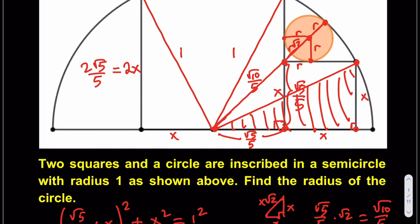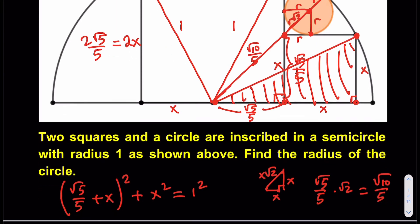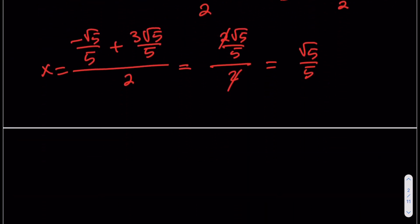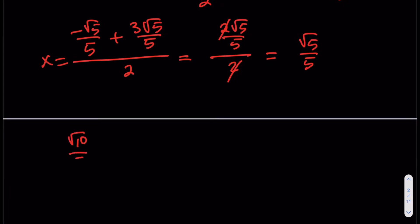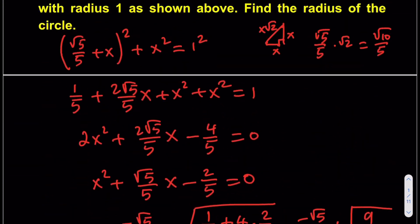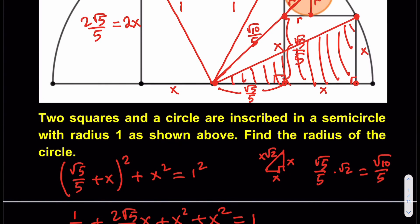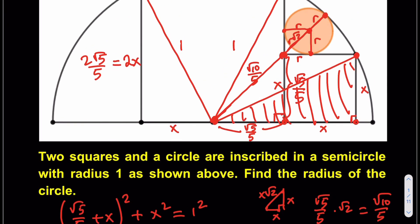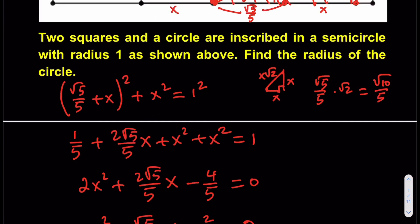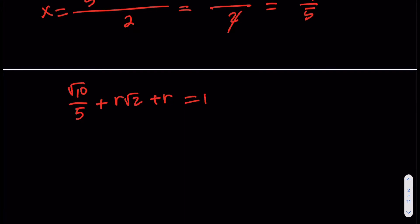The whole length from the circle's tangent point to the edge of the semicircle equals the semicircle's radius, which is 1. So we set up the equation: √10/5 + r√2 + r = 1. This combines the diagonal from the smaller square's corner, the circle's diagonal, and the circle's radius.